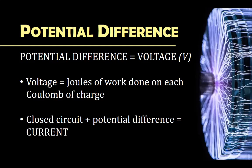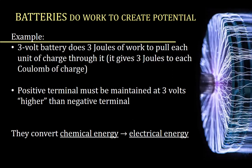A closed circuit plus a potential difference gives you current. Batteries have to do work to actually create that potential difference. For example, a three-volt battery does three joules of work to pull each unit of charge through it — it gives three joules to each coulomb of charge. The positive terminal must be maintained at three volts higher than the negative terminal for the charge to continue to flow. This is why over the life of a battery, that voltage gap actually shrinks, and you don't get as much energy out of the battery as time goes on.